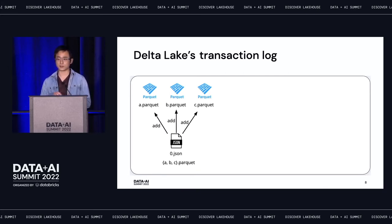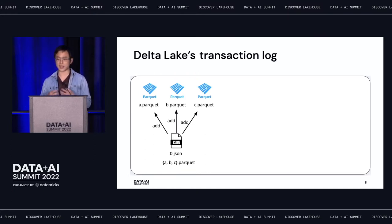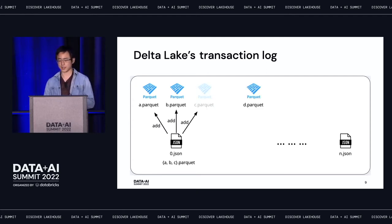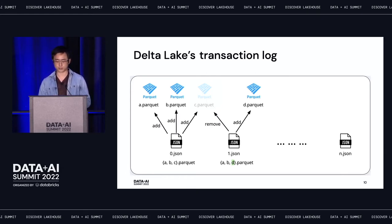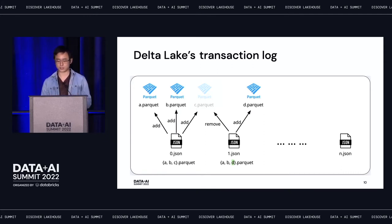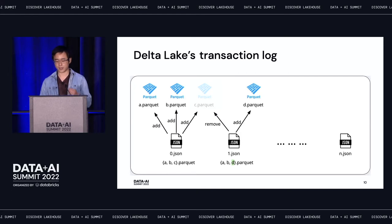What Delta Lake adds on top of a traditional data warehouse is a bunch of JSON files — each JSON file represents a single commit to the table. Within that JSON file you define a bunch of actions, and all of these actions are atomically applied. The JSON file is named with a numeric value representing the version of the table. For example, if I want to remove Parquet C and add Parquet D, I create another commit JSON with a remove action pointing to Parquet C and an add action pointing to Parquet D.